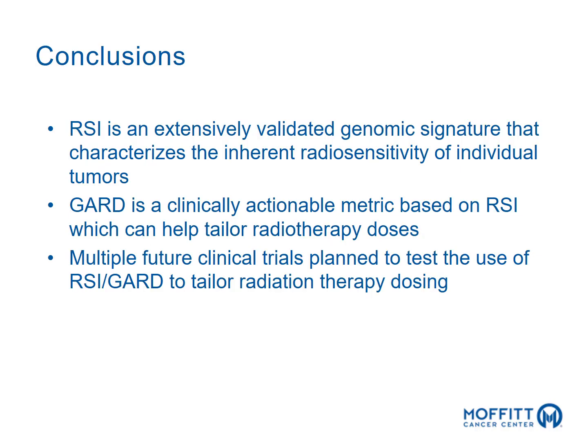In conclusion, the radiosensitivity index is an extensively validated genomic signature that characterizes the radiosensitivity of individual tumor types. The genomically adjusted radiation dose is a clinically actionable metric based on the RSI that identifies the specific radiation therapy dose needed to optimize clinical outcomes for that specific tumor type. We have multiple future clinical trials planned to test the use of the RSI and GARD to personalize radiation therapy dosing schemes based on the genomics of that individual tumor type.